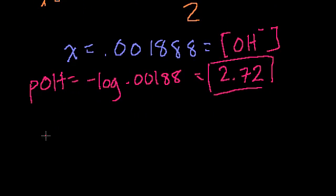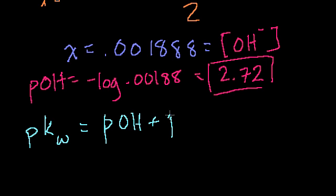And now if we want to figure out the pH. So my concentration of hydrogen ions. Just remember when you're in an aqueous solution. At 25 degrees Celsius. Your pK of water is equal to your pOH plus your pH.